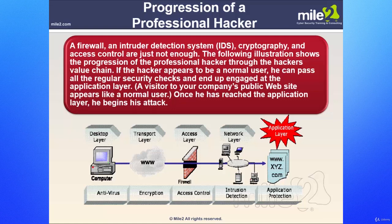A visitor to your company's public website appears to be a normal user. Once the attacker reaches the application layer, he begins his attack. We have the desktop layer, transport, access layer, network layer, and the application layer. Going in as a normal user, the attacker passes through the firewall, through the allowed port, possibly through the intrusion detection system, going directly into the application layer of the server, which then could be compromised.